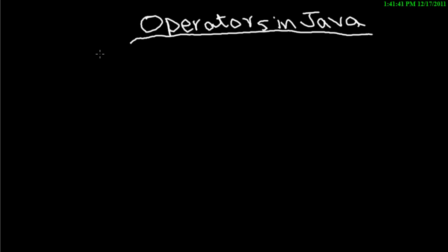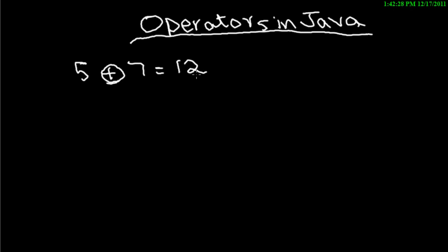In this video I'm going to be dealing with something called operators in Java. Operators are defined as special symbols which perform a predefined task on a set of operands. An operand is anything that you want an operator to perform a task on. For example, if you have two numbers — five and seven — separated by the plus operator, five plus seven equals twelve. So the plus here is an operator.